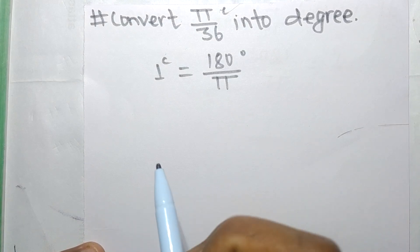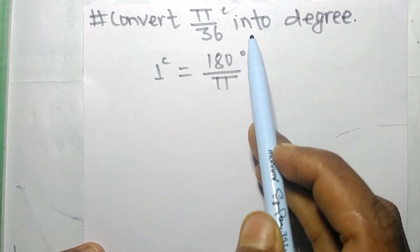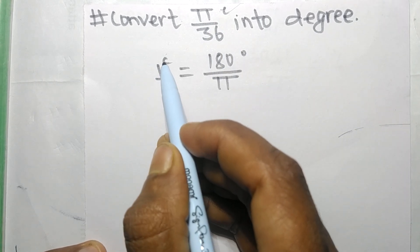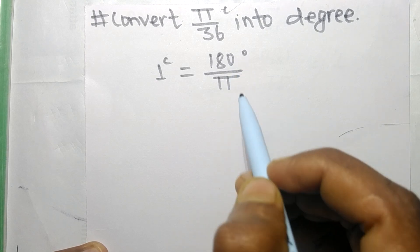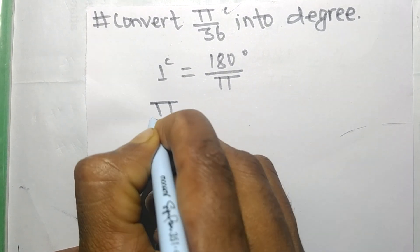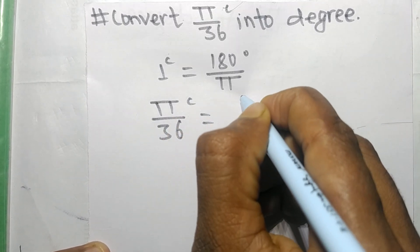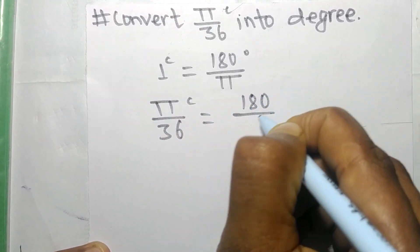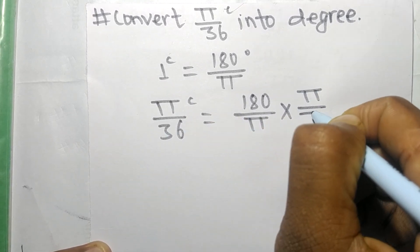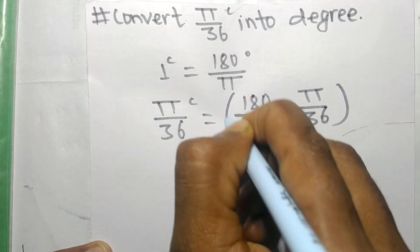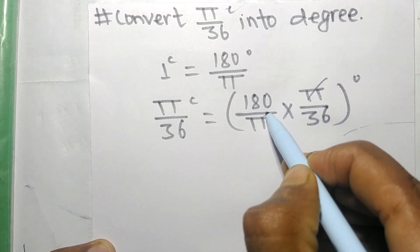Today we shall convert π/36 radian into degrees. Since 1 radian is equal to 180/π degrees, π/36 radian is equal to (180/π) × (π/36) degrees. Now we cancel — π and π cancel.